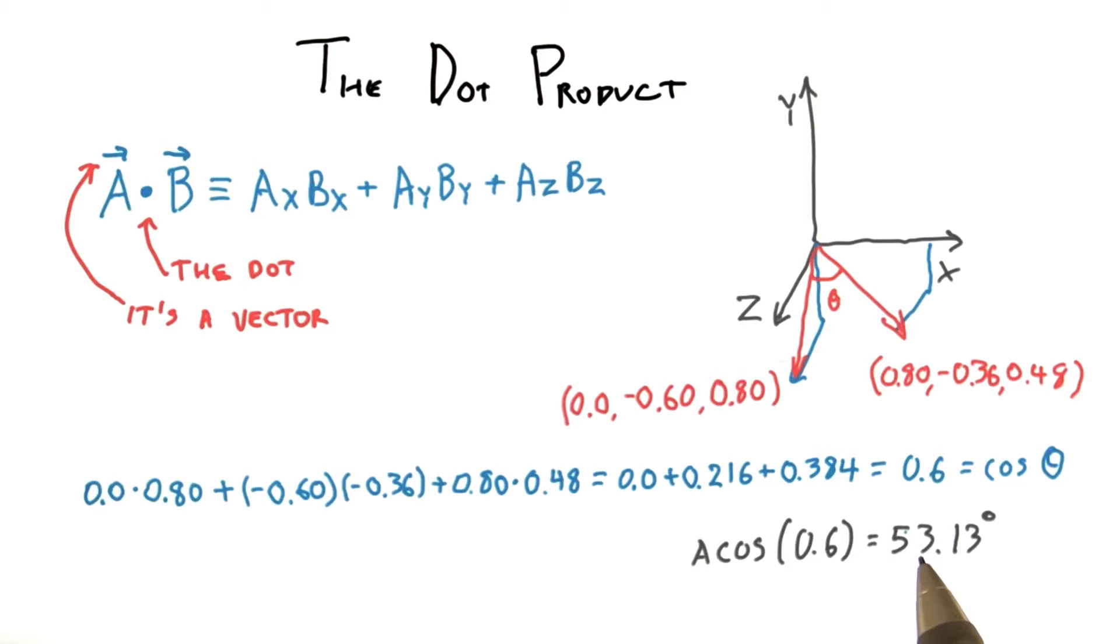However, we don't really care about the angle. We truly want the cosine, as this is how much we'll scale the light's contribution to the surface.